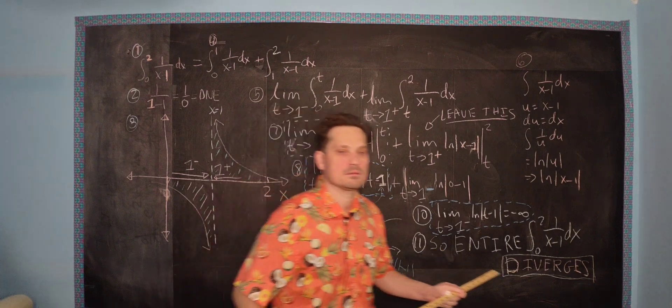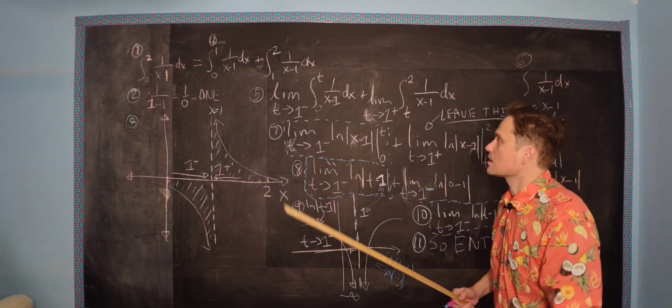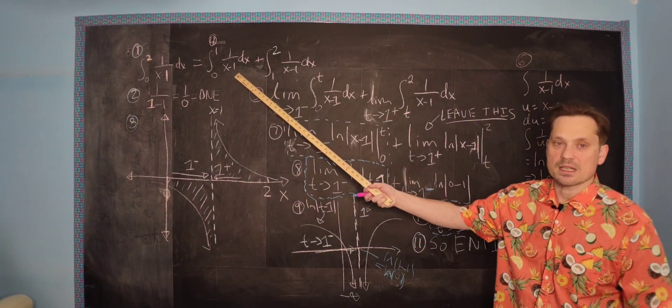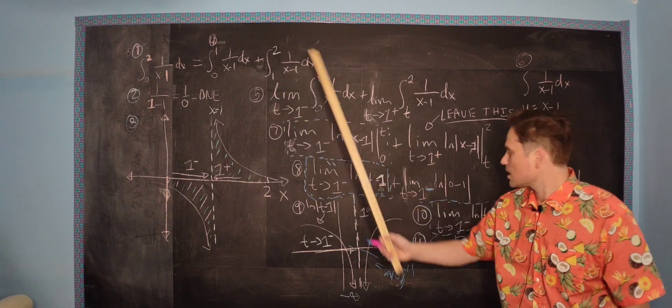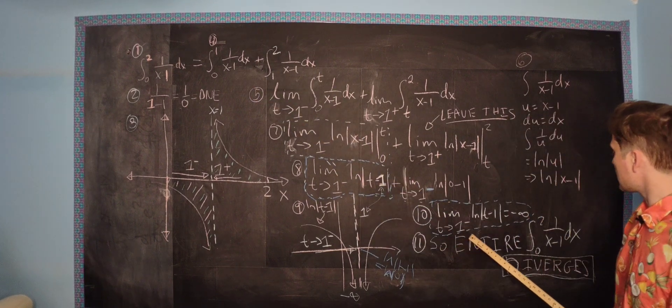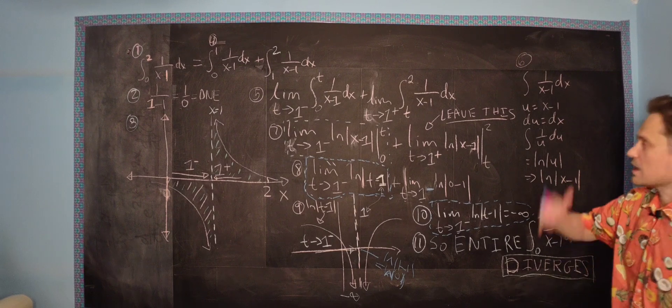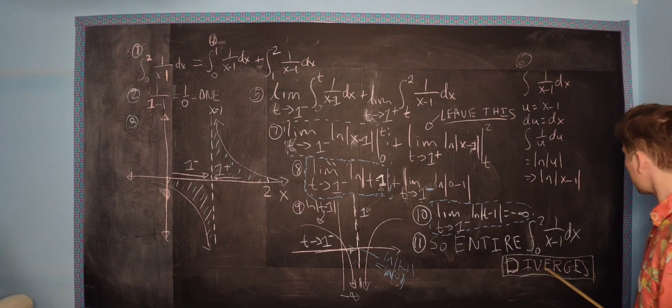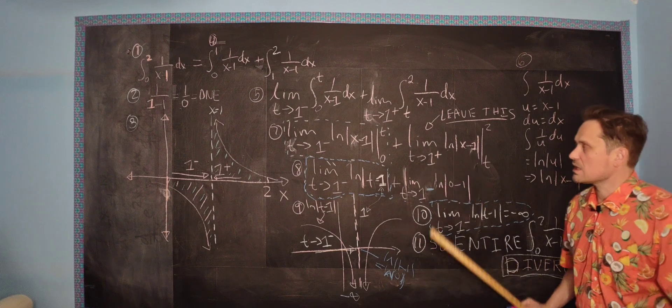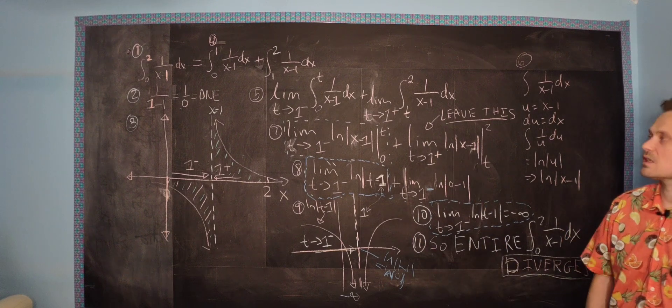For that reason, because one of these integrals, like this integral, we can already tell that diverges, the conclusion is the entire integral from 0 to 2 of 1 over x minus 1, that entire integral diverges. And these are as many steps, really, as you need to get this answer right.